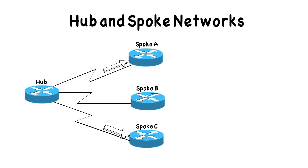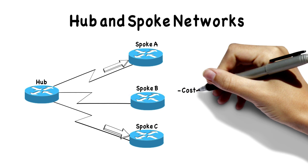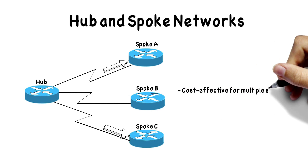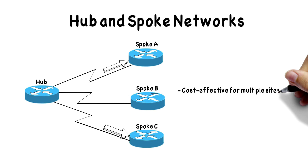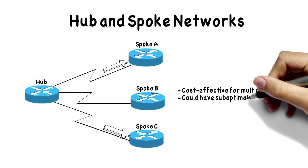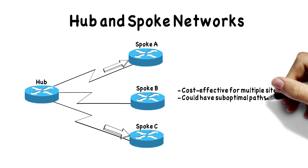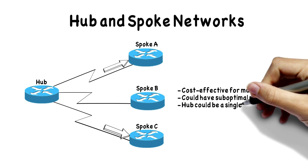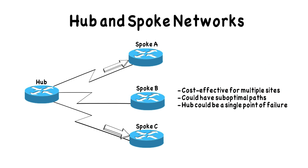Let's sum up some of the characteristics of a hub and spoke network. Because we've only got links out from the hub to each site, it's fairly cost effective for multiple locations — we don't have to have a full mesh of connections. However, as we saw going from spoke B to spoke C, we could have a suboptimal path and a little extra delay. And that hub site is potentially a single point of failure — if that goes down, no site is talking to any other site.